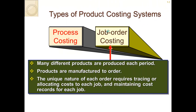Job order costing is used when many different products are produced each period. Products are manufactured to order. The unique nature of each order requires tracing or allocating costs to each job and maintaining cost records for each job. Each job is very different in nature, and we can track jobs separately to assign exact costs to each specific job.